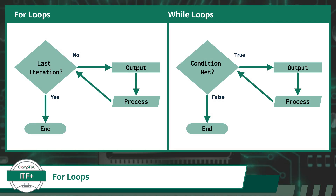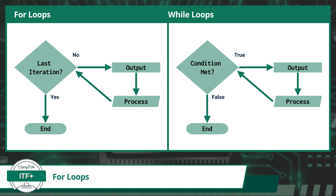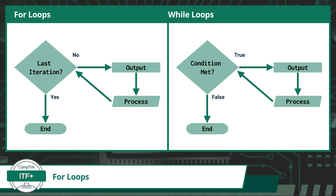A for loop is a programming construct that is very similar to a while loop, but they differ slightly in their structure and application. Both loops repeat a block of code, allowing for efficient automation of repetitive tasks. The key difference lies in their decision mechanisms. A for loop, as pictured on the left, typically specifies the number of iterations prior to execution, making it ideal for situations where the number of iterations is known in advance. A while loop, as pictured on the right, relies on a condition to control its execution, making it more suitable for scenarios where the number of iterations is uncertain.